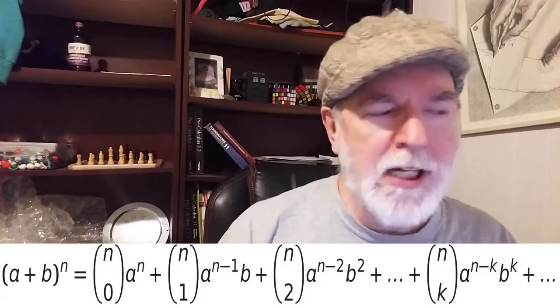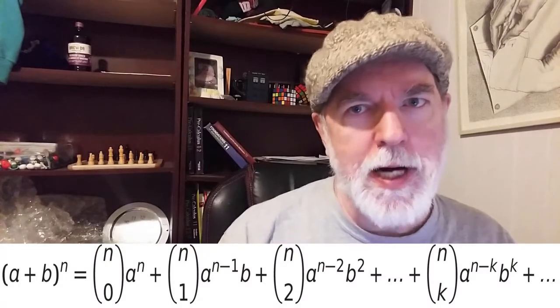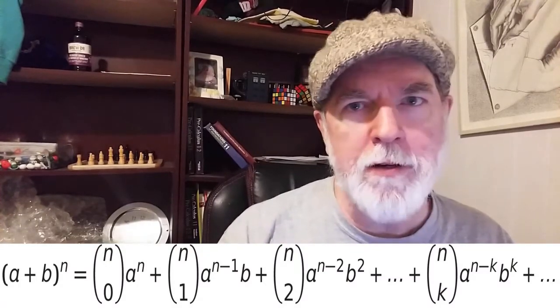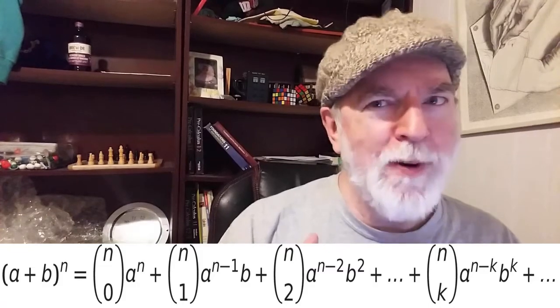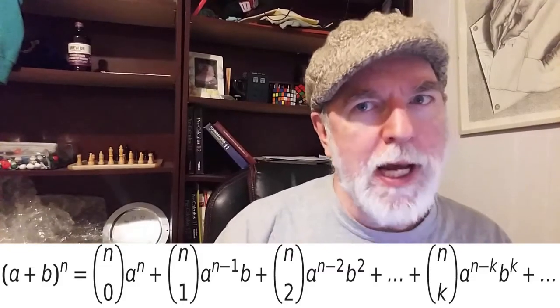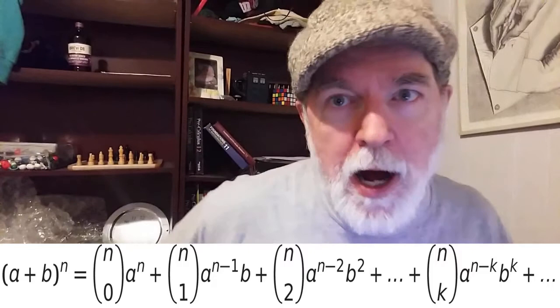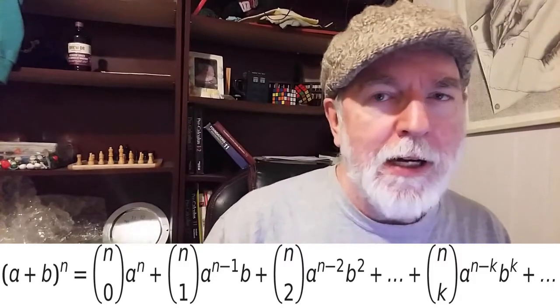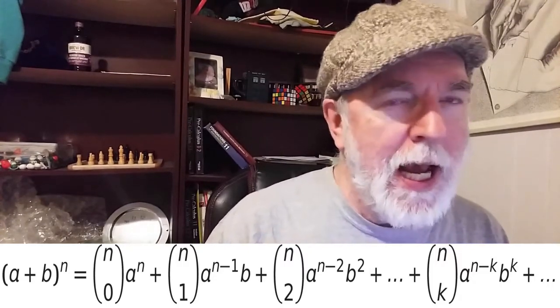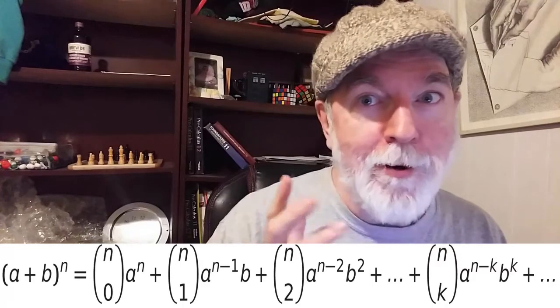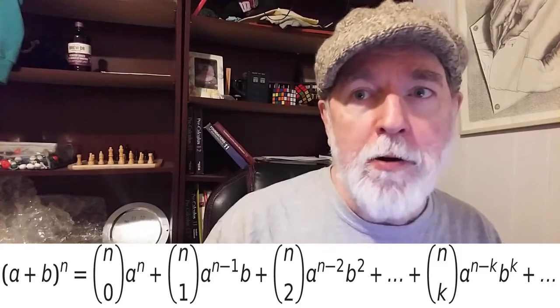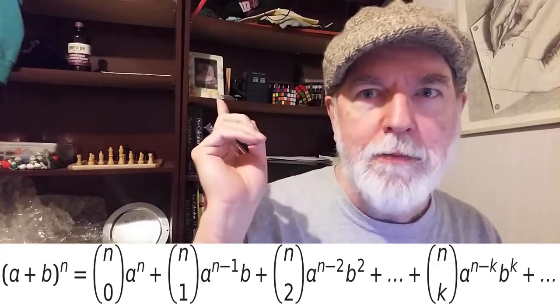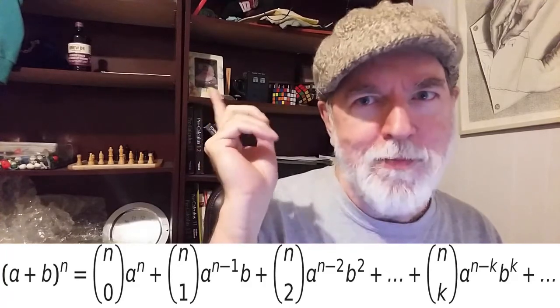We want to be able to apply the binomial theorem when the exponent is something other than a positive integer. We'll need this before going into chapter four of Thomson's Calculus Made Easy. And if binomial theorem is like what to you, I got a one of these places playlist.